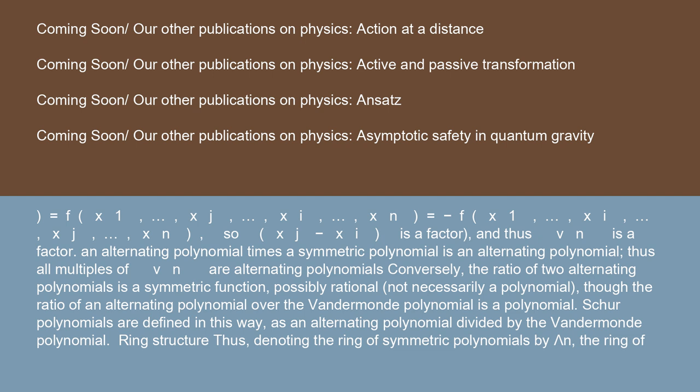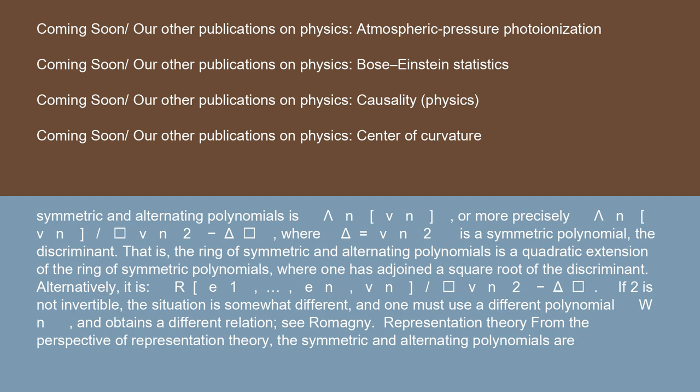Ring structure: denoting the ring of symmetric polynomials by Λ_n, the ring of symmetric and alternating polynomials is Λ_n[V_n], or more precisely Λ_n[V_n] / (V_n² minus Δ), where Δ equals V_n² is a symmetric polynomial — the discriminant. That is, the ring of symmetric and alternating polynomials is a quadratic extension of the ring of symmetric polynomials, where one has adjoined a square root of the discriminant. If 2 is not invertible, the situation is somewhat different, and one must use a different polynomial W_n and obtains a different relation.